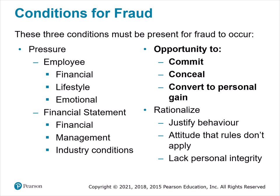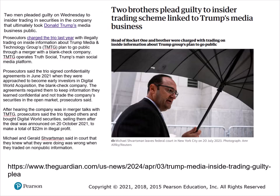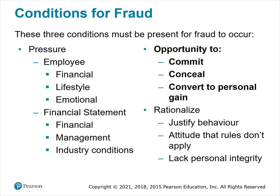The conditions for fraud can be split into three pieces: pressure, opportunity, and rationalization. As one example, two guys pled guilty to insider trading on Trump's media business — they had signed confidentiality agreements and took that information to trade on. The pressure could have been wanting more money or living above their means. The opportunity was having access to confidential information. And then there's rationalization — people don't want to think of themselves as bad people, so they find some way to tell themselves they're still a good person.